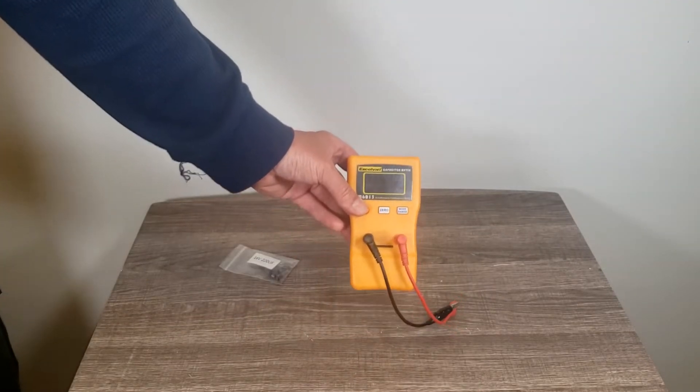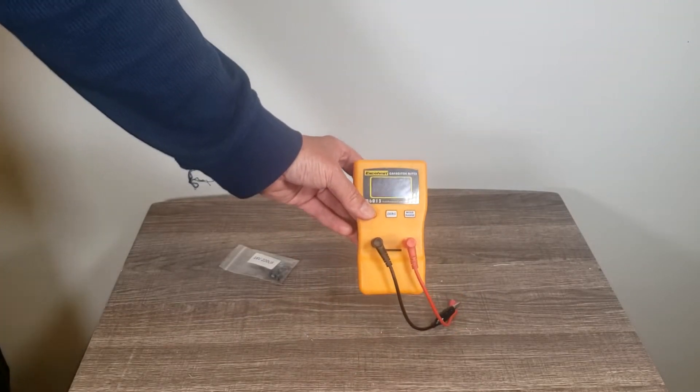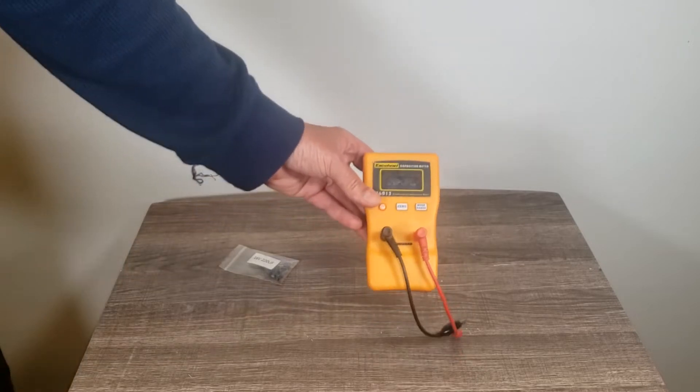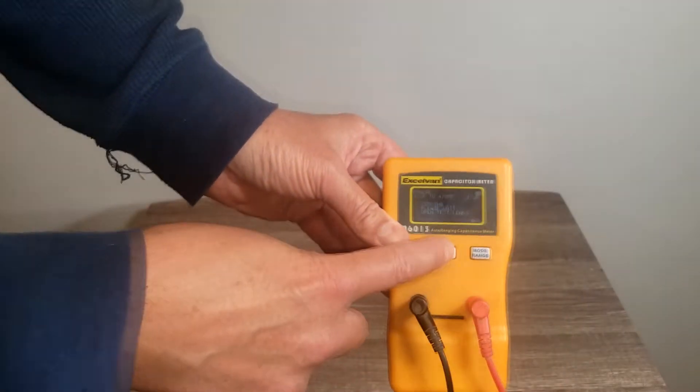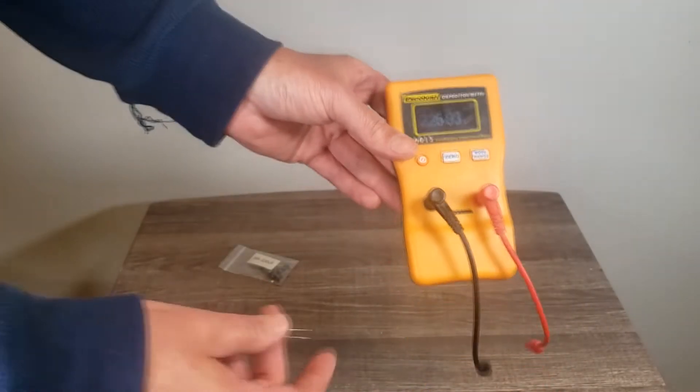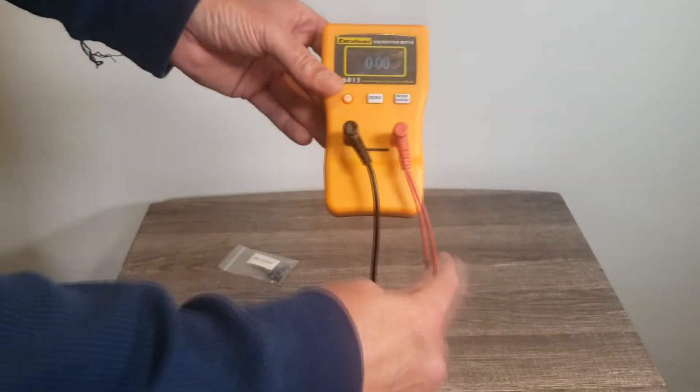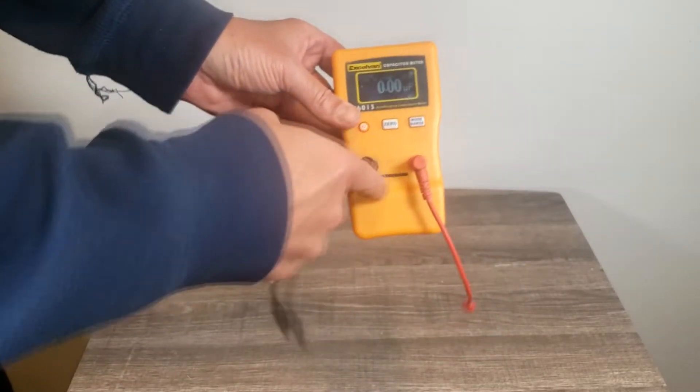This thing works pretty good, it's the Exilvari capacitor meter. Basically just turn it on, zero it out, and you have two options with electrolytic capacitors: you can either use the leads or you can stick it in the slot right here.